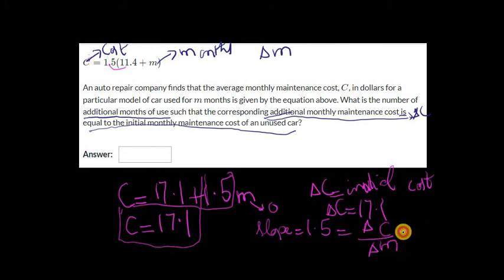Now to find the change in m, all I need to do is rearrange this a little bit. It's going to become change in m equals 17.1 divided by 1.5. This is going to go here, this is going to come down—it's going to become 11.4.